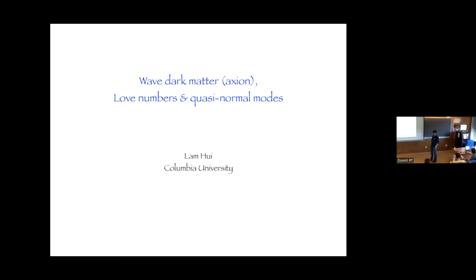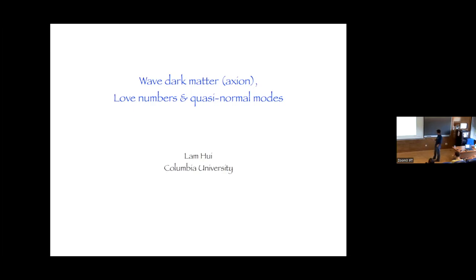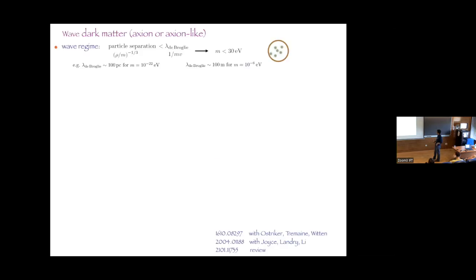I originally prepared this talk to be about black holes or black hole perturbation theory. However, after talking to some of you, I decided that maybe I could talk a little bit about axions, given the different nature of this workshop. So I added that. I suspect I won't have time to talk about all three topics, so probably roughly 20 minutes on axions, 30 minutes on black hole numbers. This is a two-part talk — kind of an overview talk if you want.